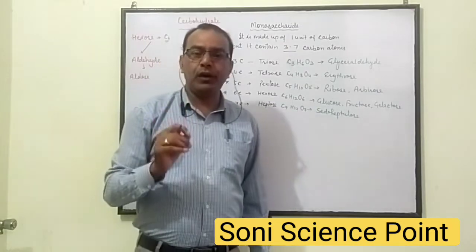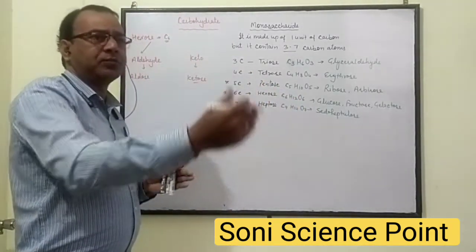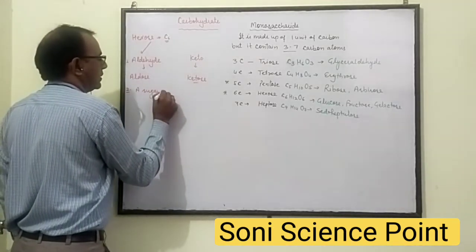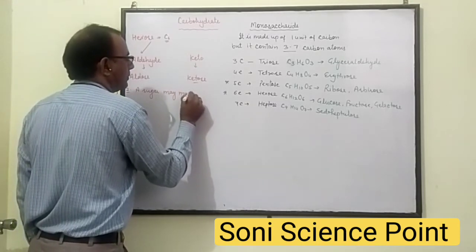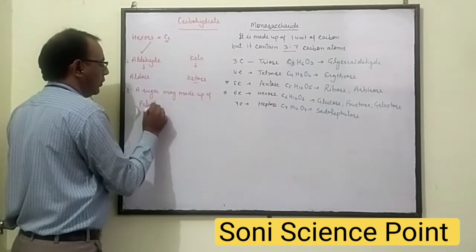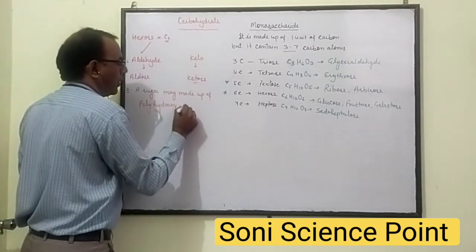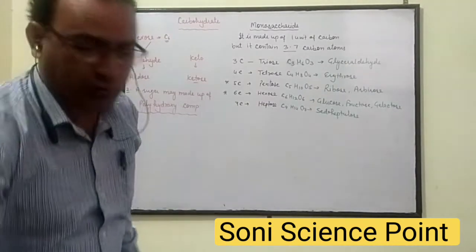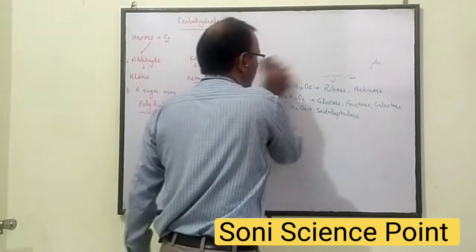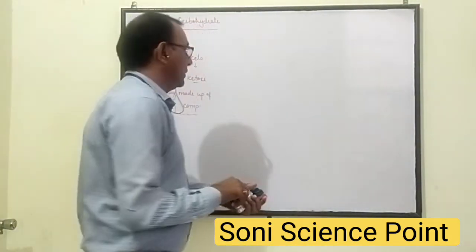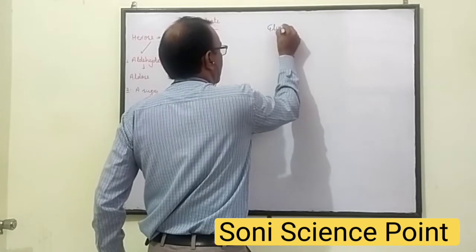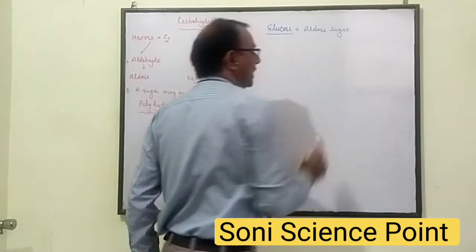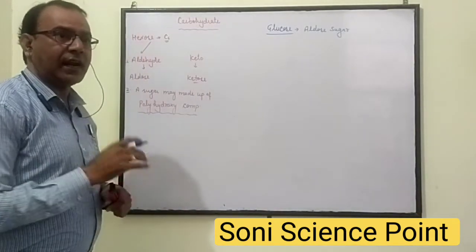The second property of Hexose sugar is that it is a polyhydroxy compound, meaning a sugar is made up of many hydroxyl (OH) groups. Now, discussing Hexose sugar — starting with glucose. Glucose is an aldose sugar because it contains one aldehyde group, and a sugar which contains an aldehyde group is called aldose sugar.